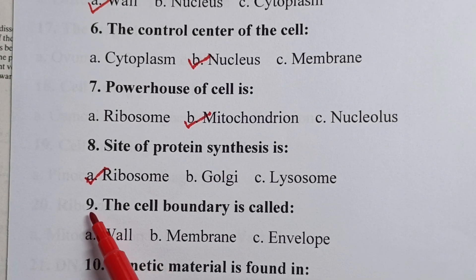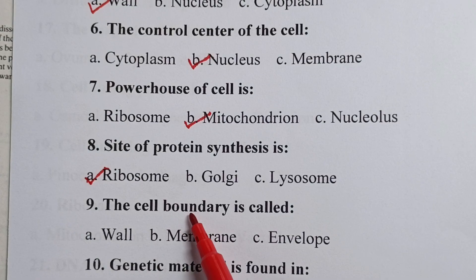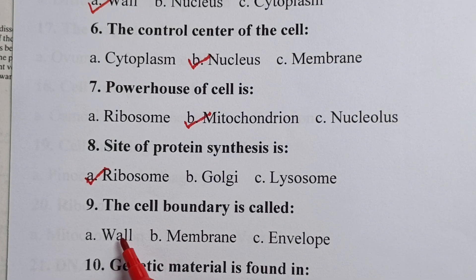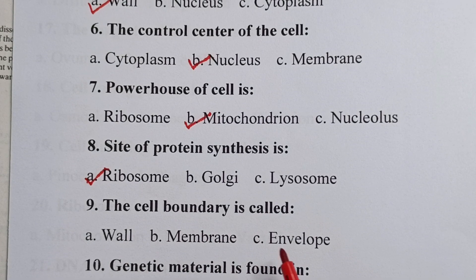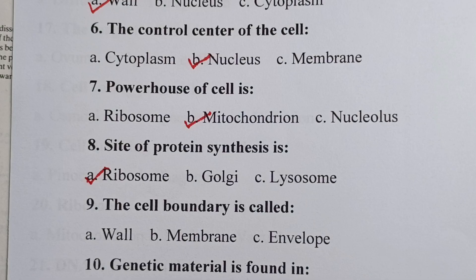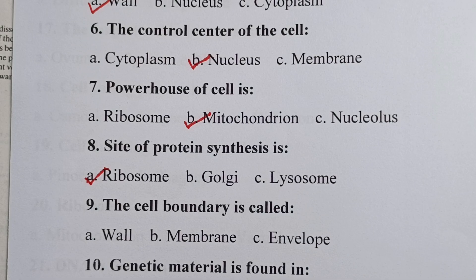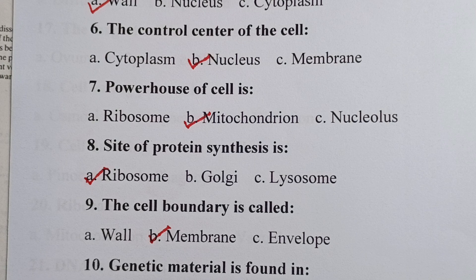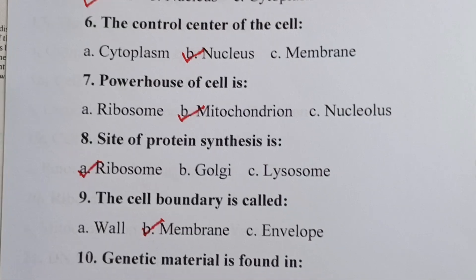Question nine: the cell boundary is called — is it wall, membrane, or envelope? Your correct answer is membrane. So, the cell boundary is called the plasma membrane.